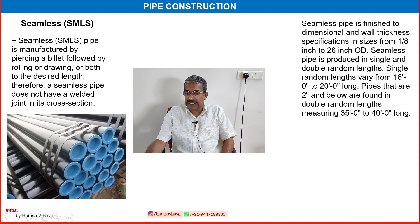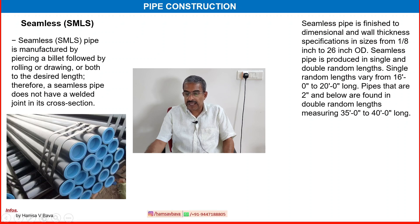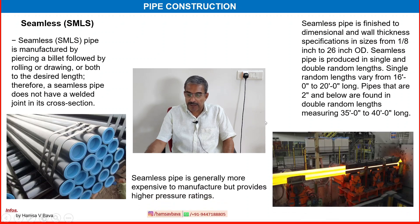Seamless pipe is finished to dimensional and wall thickness specifications in sizes from 1/8 inch to 26 inch OD. Seamless pipe is produced in single and double random lengths. Single random length varies from 16 to 20 feet long. Pipes that are 2 inch and below are found in double random lengths measuring 30 to 40 feet long. Seamless pipe is generally more expensive to manufacture but provides high pressure ratings.